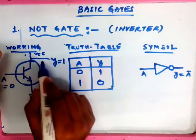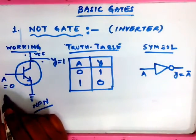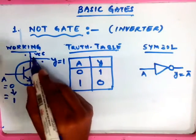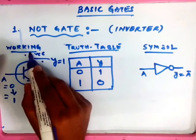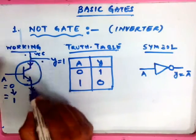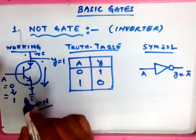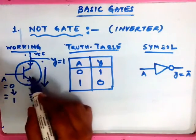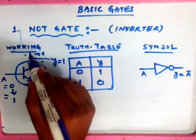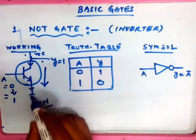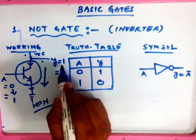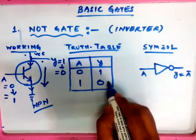When you apply 1 as input, the transistor turns on. The VCC will have a closed circuit and the current flows in this direction — it will be grounded. So when input is 1, the transistor acts as a closed switch, VCC flows through it directly to ground, and the output will be 0. This verifies the second row of our truth table.